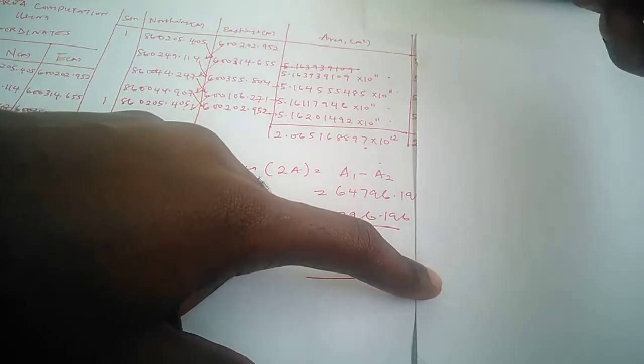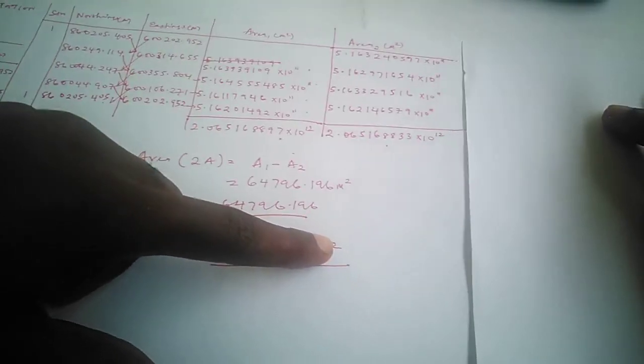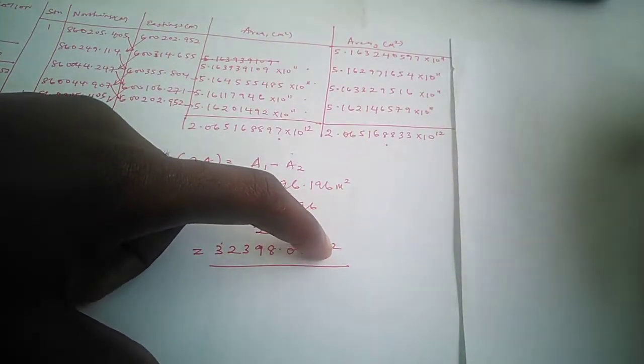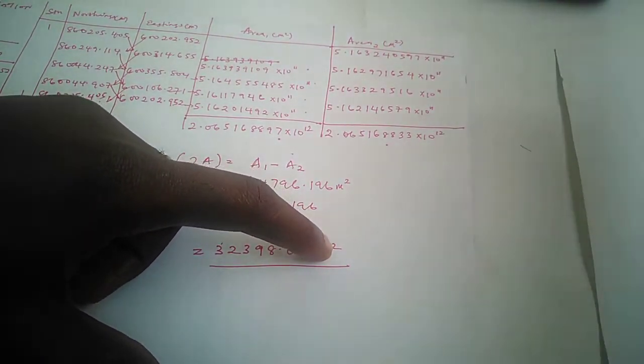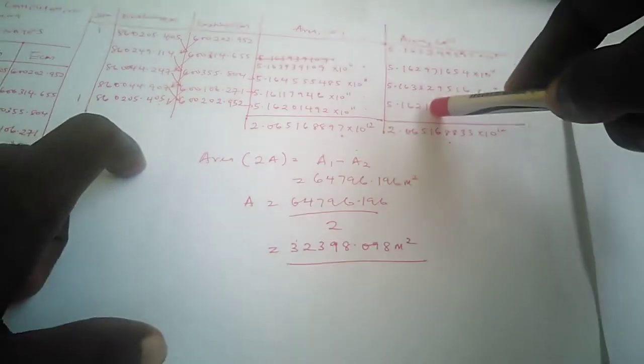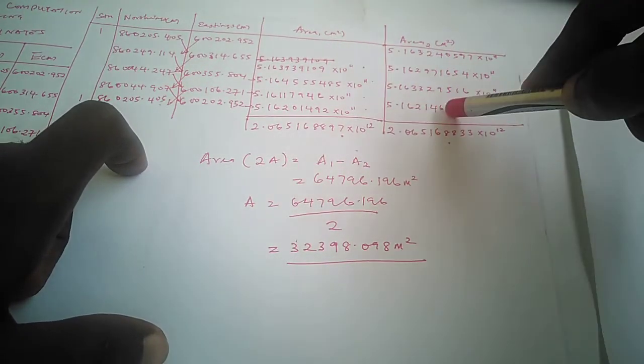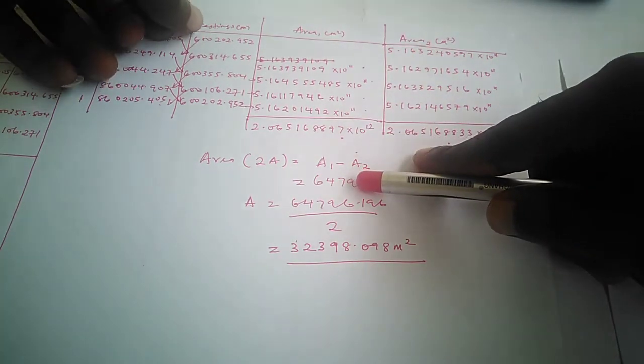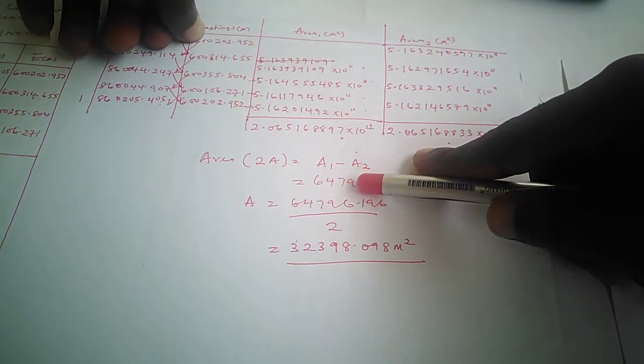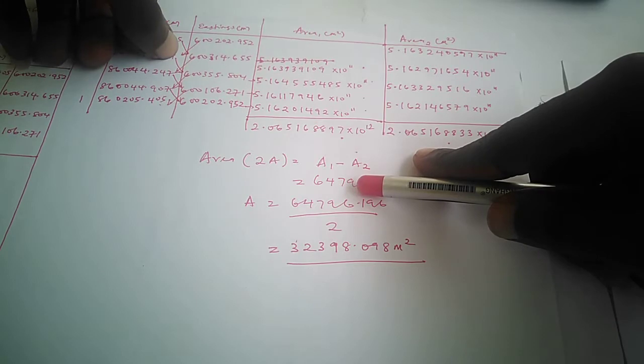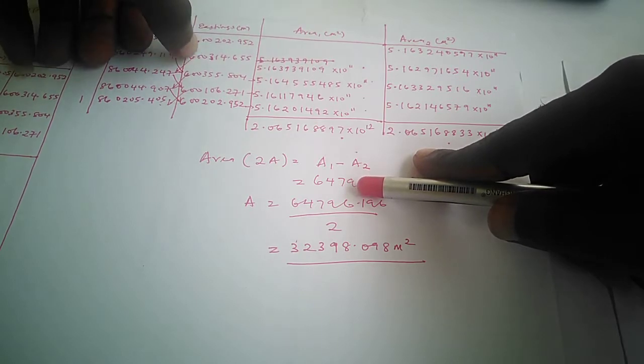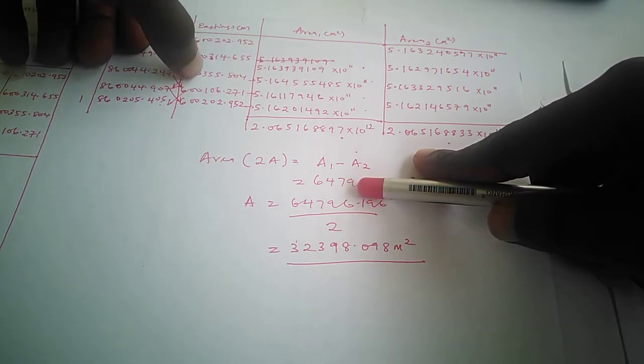The next step is the second partial area. The first one was this way; now for the area we are going to get on this second partial area, it will be coming this other way. So this first easting here will multiply the second northing.